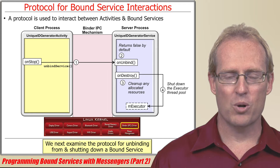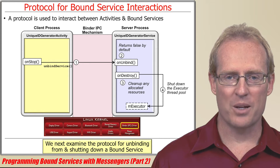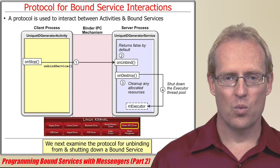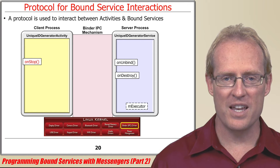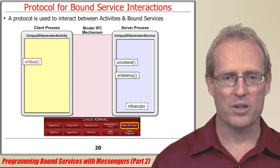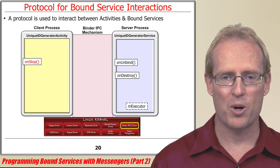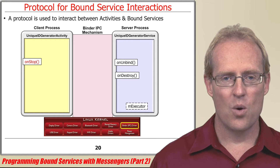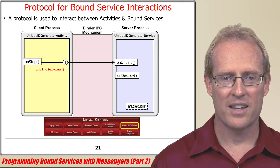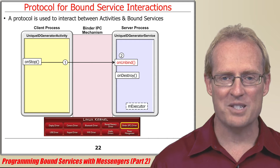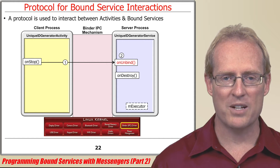Next, we'll examine the protocol for unbinding and shutting down a bound service. When an activity is completely obscured by another activity, the Android activity framework dispatches the activity's onStop hook method. When the unique ID generator activity's onStop method is dispatched, it calls the unbindService method. If this activity was the last client connected to the service, the Android service framework dispatches the service's onUnbind hook method.